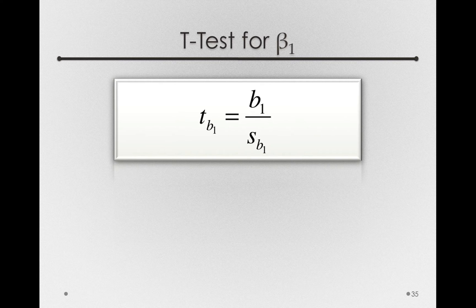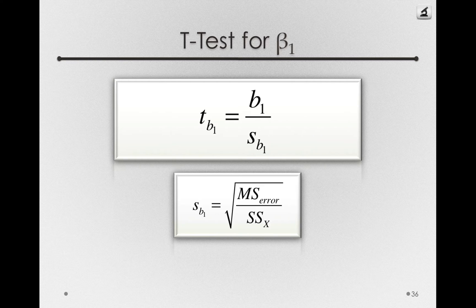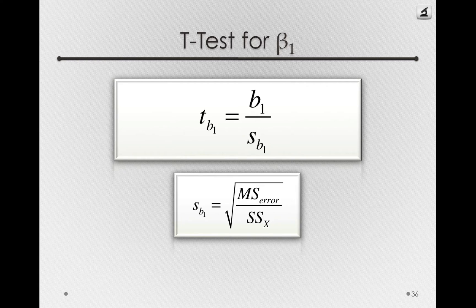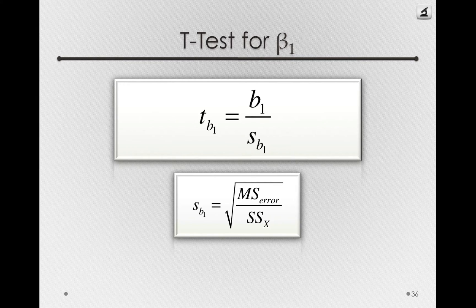Now I want to show you the estimated standard error. You don't really need to know this, but I want you to get some insight into how it's formed. Notice that the denominator has the sums of squares for x, that is, the sum of square deviations in simply the x variable.